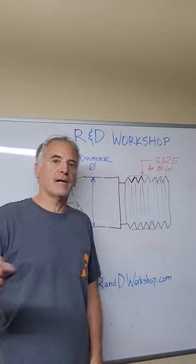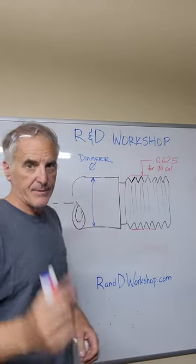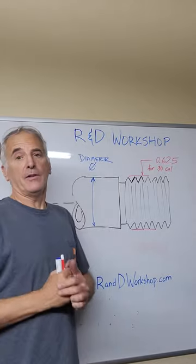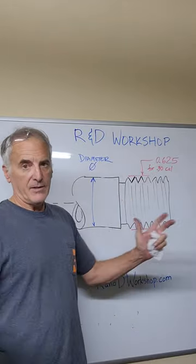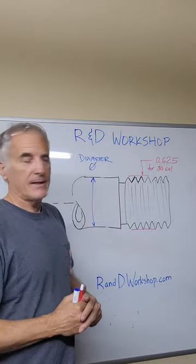Hey, this is Bob Wilkes with R&D Workshop. We manufacture suppressors. If you've got a barrel or a rifle and you want to put a suppressor on the end of it, a hunting rifle, can you do it? Can you thread the barrel and put on that suppressor?